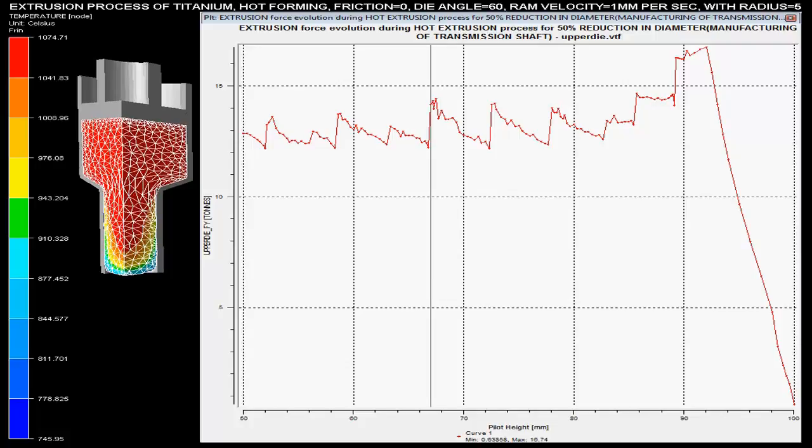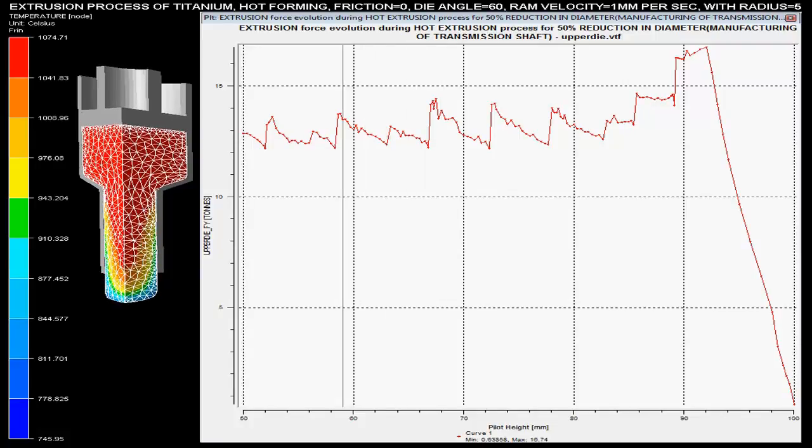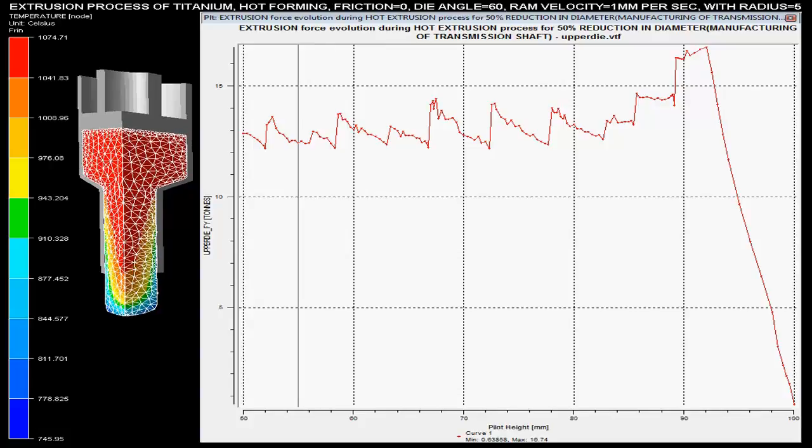The extrusion forces with respect to the billet height are shown on the graph. These forces are maximum when there is a sudden change in the area of the cross section of the billet.